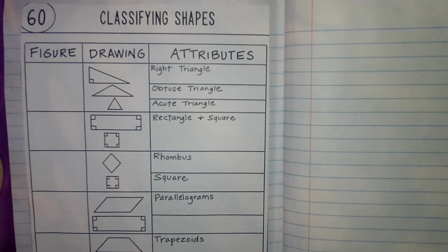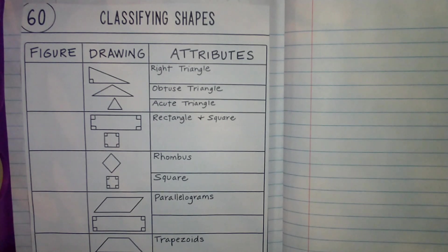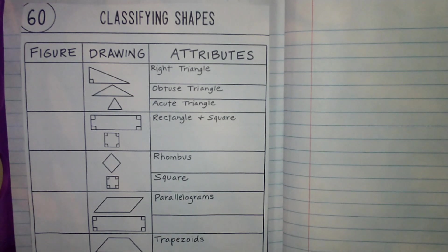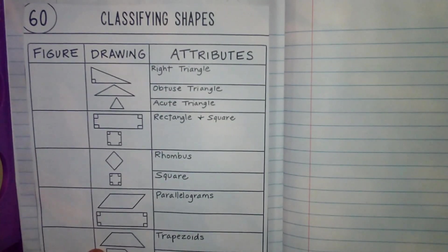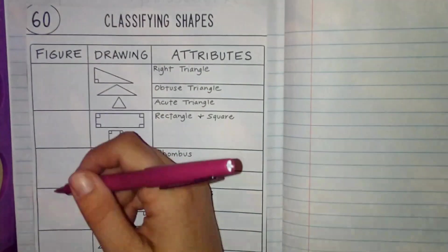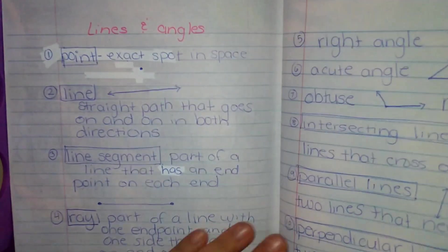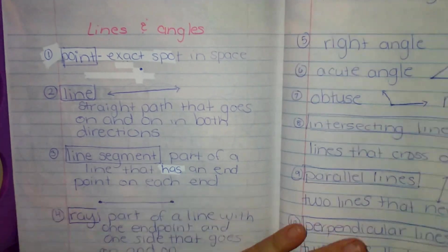Hello, this is going to be our second lesson in unit 16 for 5th grade geometry: classifying shapes. Last lesson we talked about lines, line segments, and angles, and the different kinds of each. We used these different kinds of lines and angles in order to name different shapes, and we're going to be talking about basic shapes and their different attributes or characteristics. This is number 60 at the top — it is in your quarter one math notes. Locate it, cut it out, glue it in your notebook, and this is on the back of your notes from the last lesson.